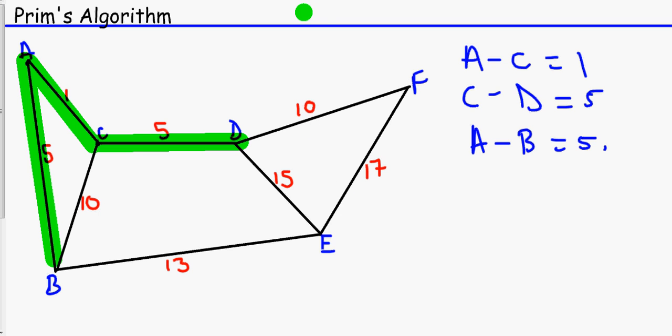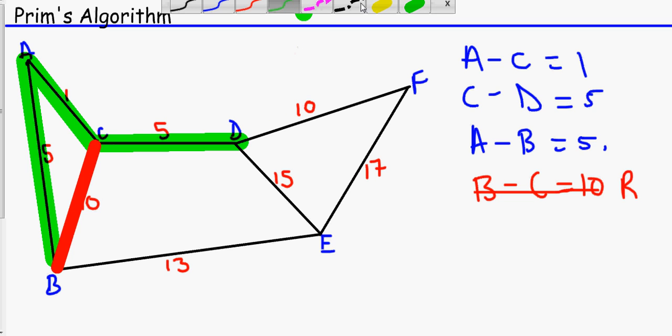Well, we can't really go down here. So the next one we can do, we can't do this one because that will get rejected just due to the fact that if we did that it will create a cycle. Edexcel students you might want to write down B to C, 10 and then cross it out and write reject. B to C equals 10, cross it out and then write reject. The next one is D to F and that would not make a cycle. So D to F, D to F and that's 10.